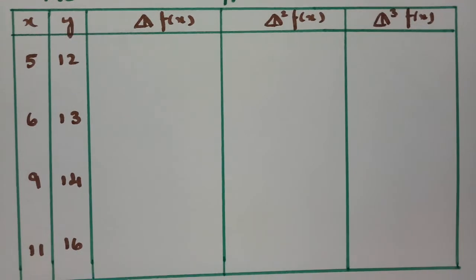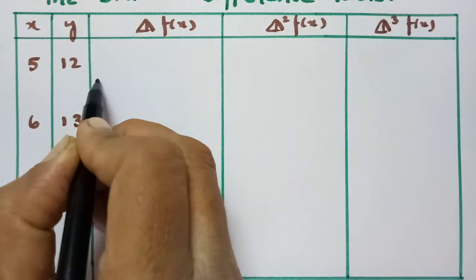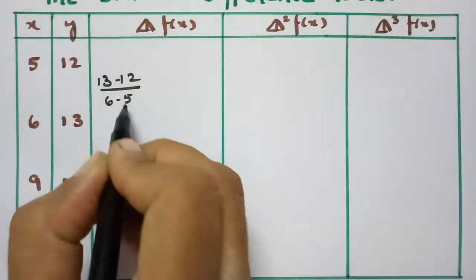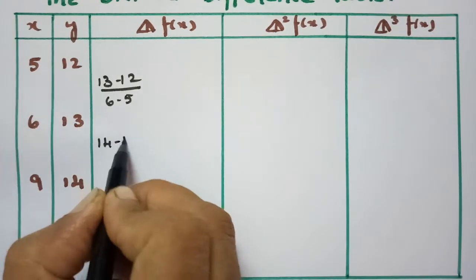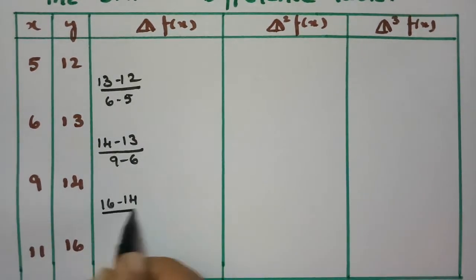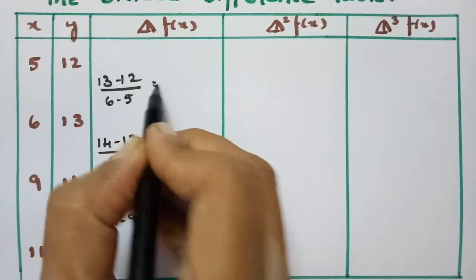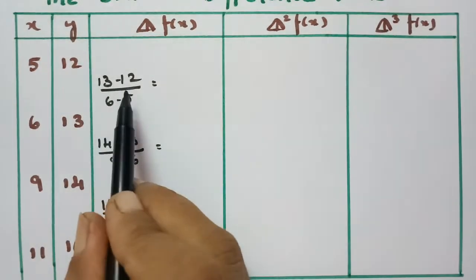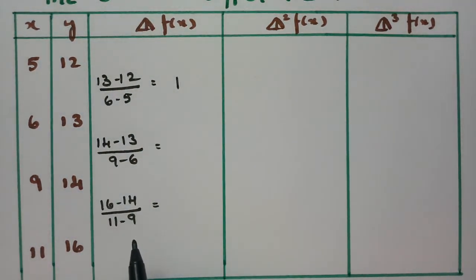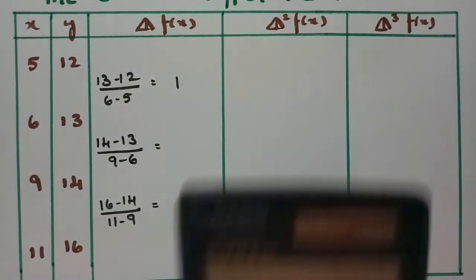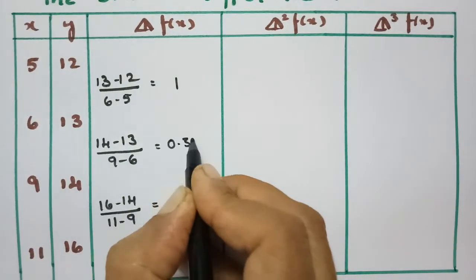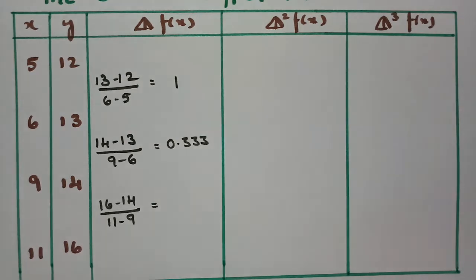For the first divided differences: (13−12)/(6−5) = 1/1 = 1; then (14−13)/(9−6) = 1/3 = 0.3333; and (16−14)/(11−9) = 2/2 = 1. So the first divided differences are 1, 0.3333, and 1.